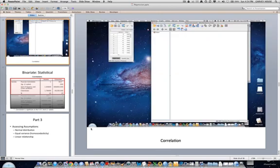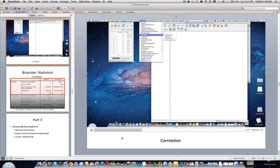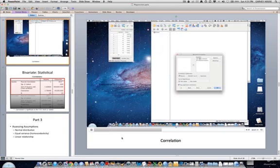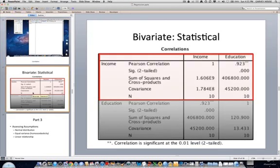So to compute a correlation analysis in SPSS, I have a little video here. Analyze, correlate, bivariate, move both of the variables into the variables box, click Pearson because these are both scale variables, and so the Pearson R is the correct correlation coefficient.